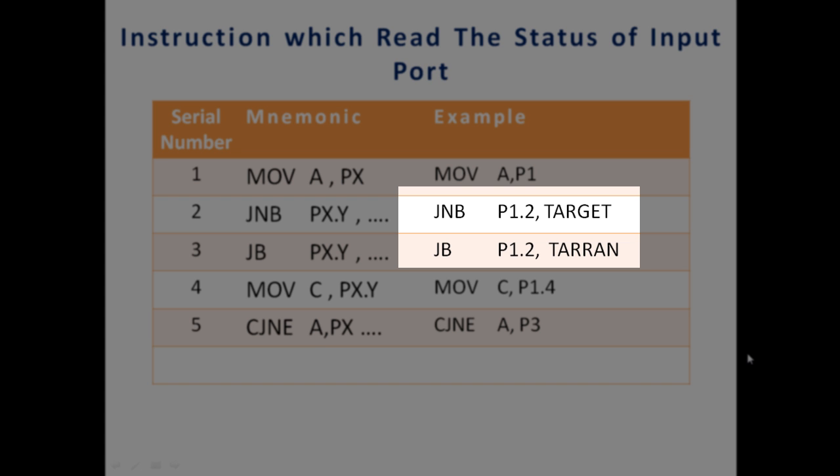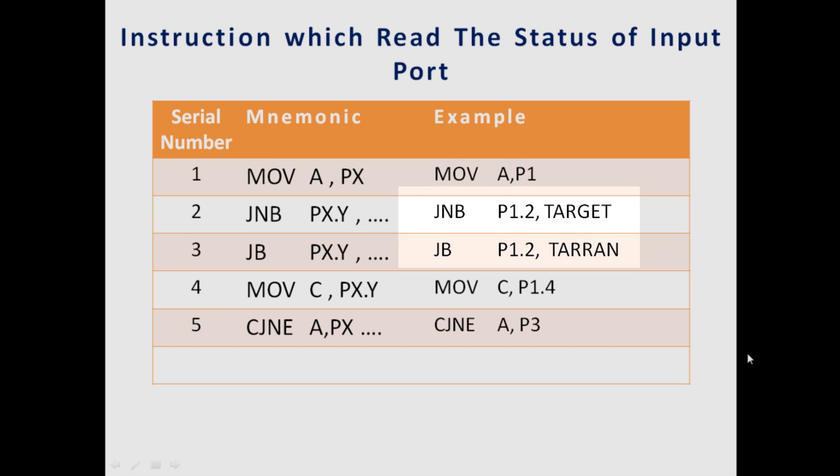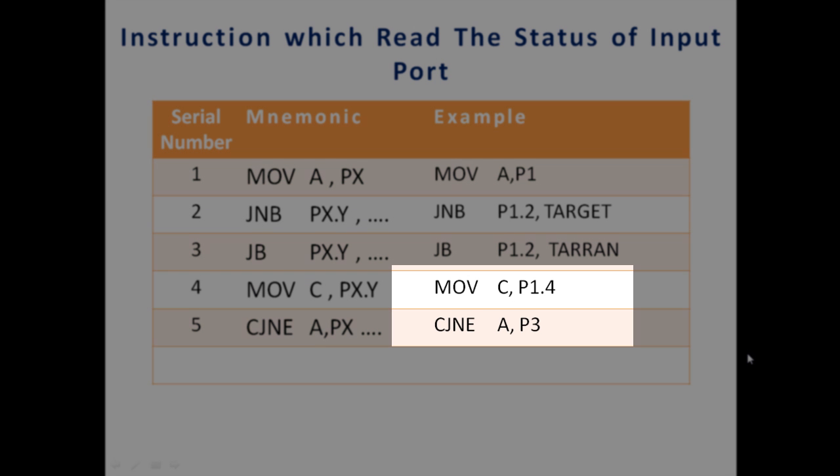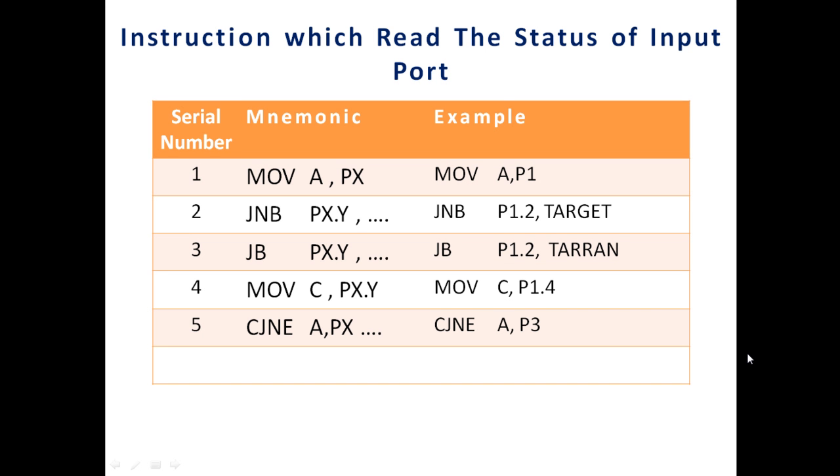When we test the bit, jump if not bit, the pin of port 1.2 is tested and if its value is 1, the jump is not executed. If its value is 0, the jump is executed. The reverse for jump if bit, move a particular bit to the carry bit, and then compare a port with register A. All these instructions will read the port pins and process the values.